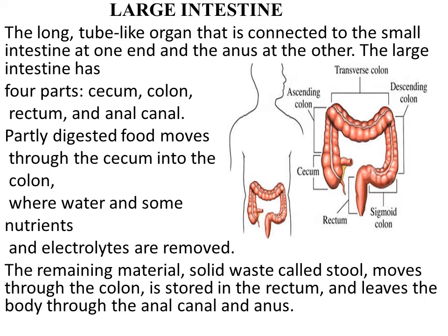Large intestine is divided into four parts. As you can see in the diagram, the four parts are cecum, colon, rectum, and anal canal. These four parts — cecum, colon, rectum, and anal canal — make up the large intestine.